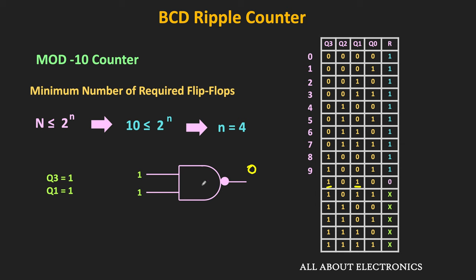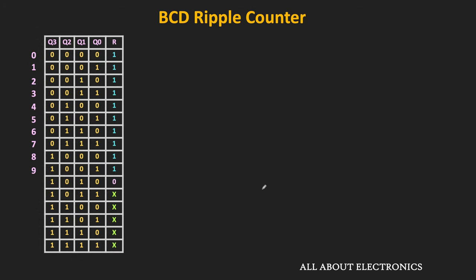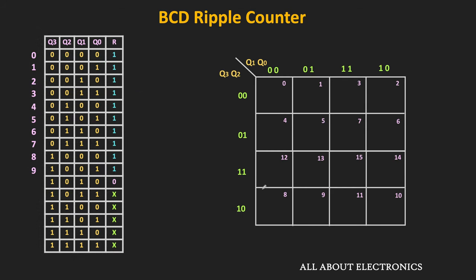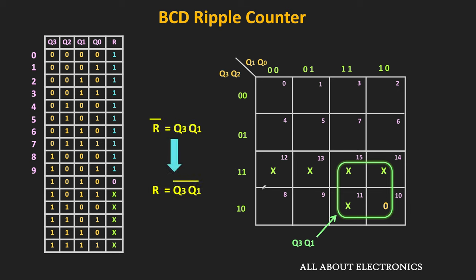The same result can be verified with the K-map. Combining the zeros with the don't care terms: minterm M10 equals 0, while M11 to M15 are don't care terms. We combine M10 with M11, M14, and M15. This group corresponds to Q3·Q1. Since we are combining zeros, R' = Q3·Q1, or R = (Q3·Q1)̄. This function can be implemented with a NAND gate — and with the K-map we get the same result.